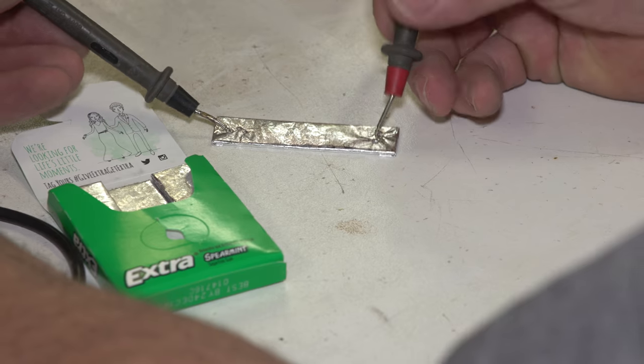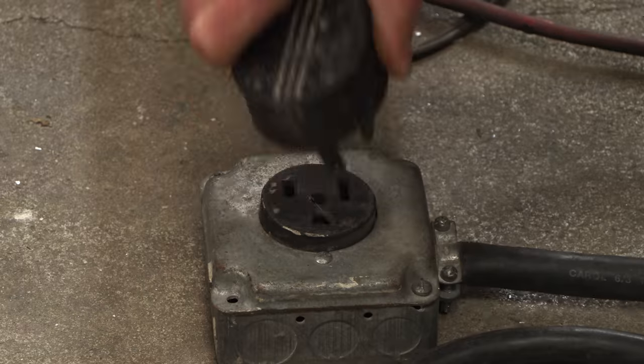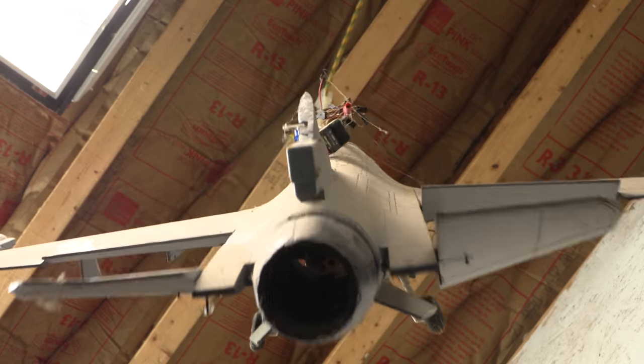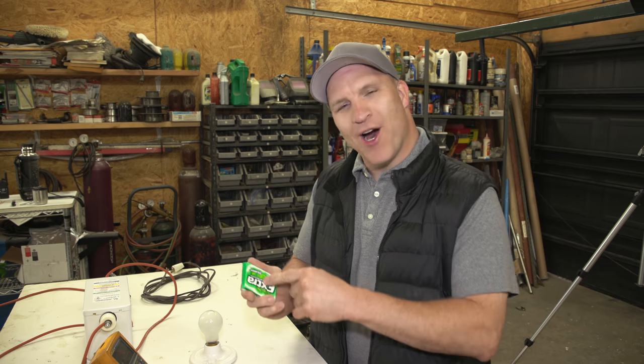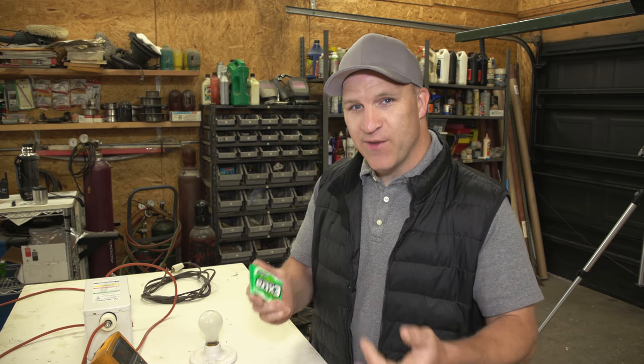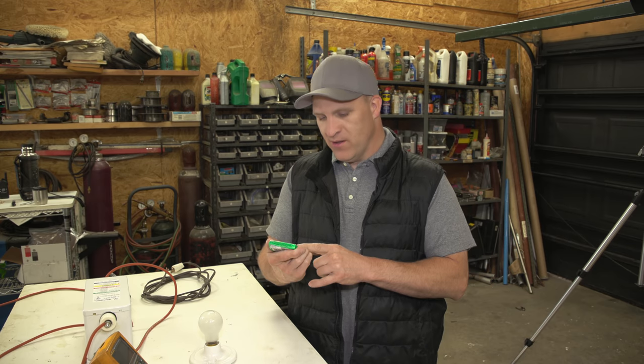In this episode of Warped Perception I'm going to be putting these gum wrappers through a few scenarios from AC to DC to high voltage to see if you're in a pinch could you use a gum wrapper to complete a circuit and if so what type of circuit? Let's find out.